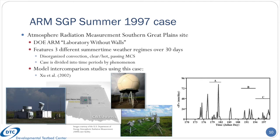Another deep convective case, albeit over land, is the ARM SGP Summer 1997 case. This case is situated over the ARM Southern Great Plains Observational Super Site, also known as the Laboratory Without Walls, and used a wide array of remote and in-situ measurement platforms over June and July of that year. Over the 30-day intensive observational period, three different summertime weather regimes were observed, including disorganized convection, clear and hot conditions, and a passing mesoscale convective system. A fine reference paper for this case was written by Hsu and co-authors in 2002.